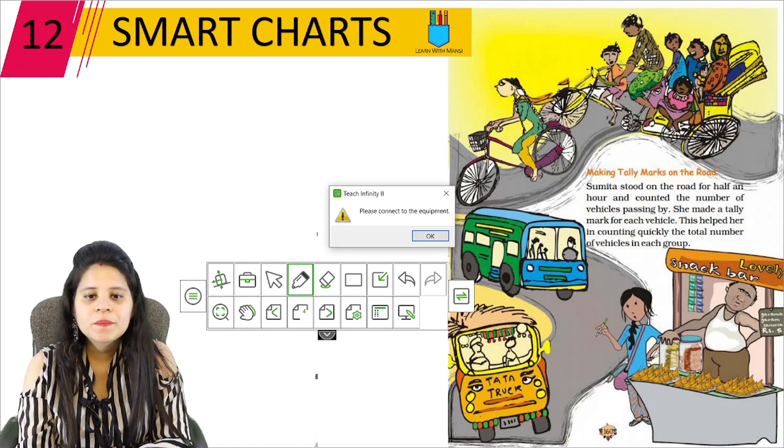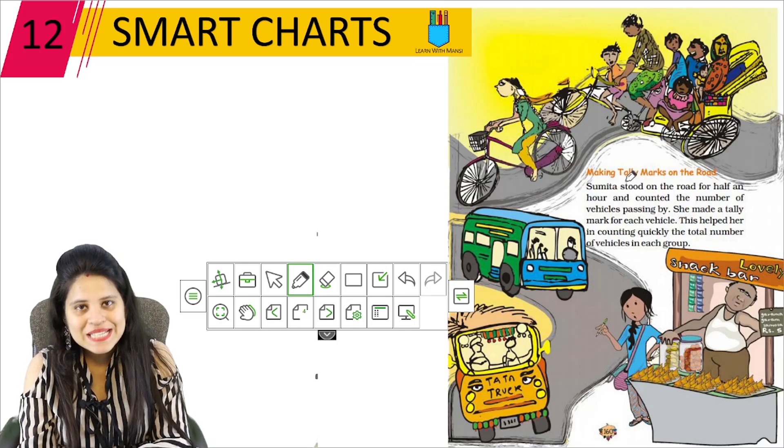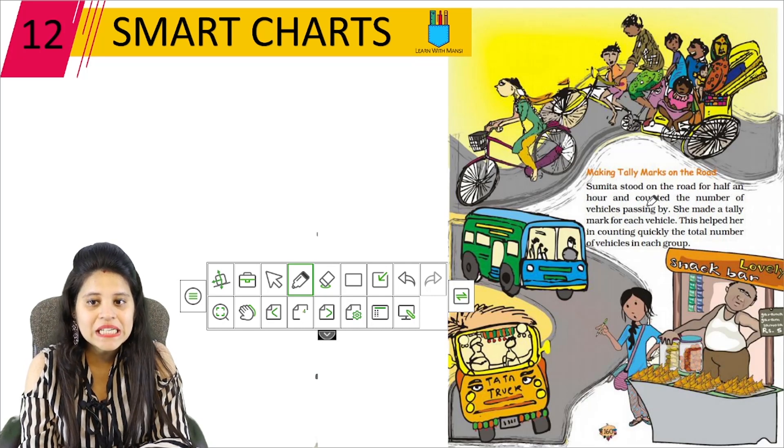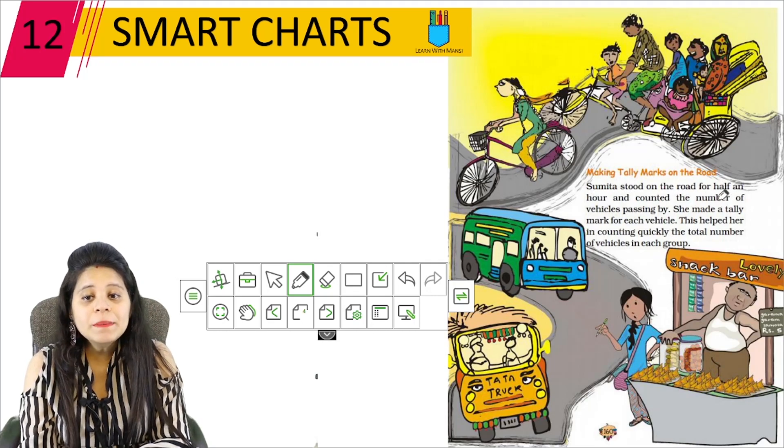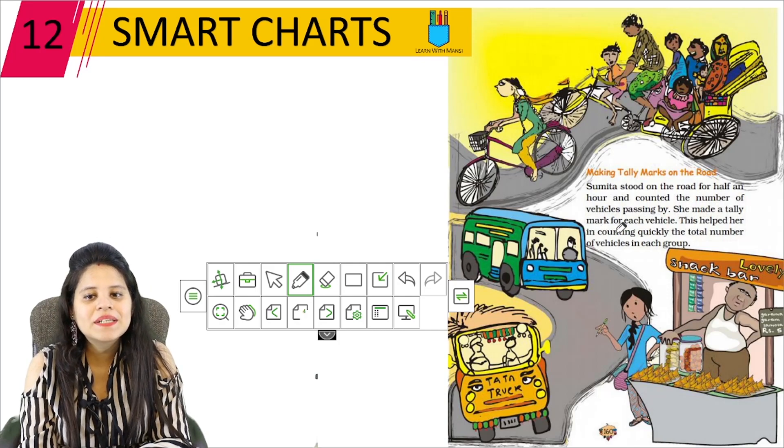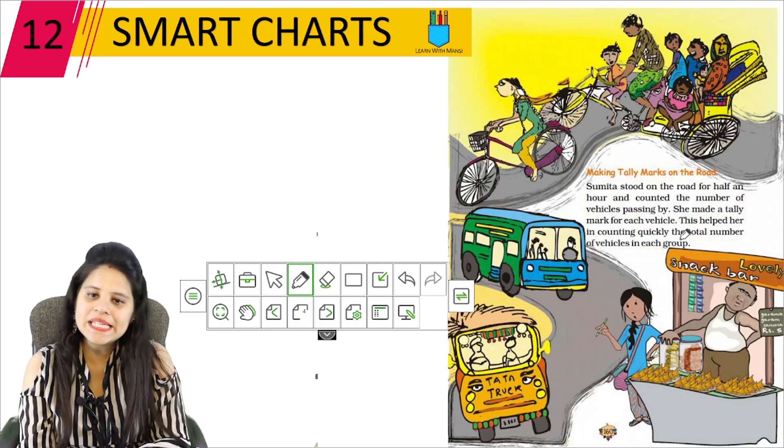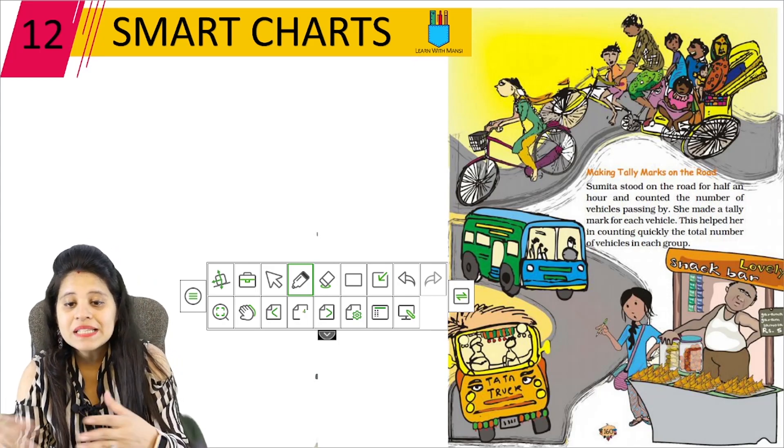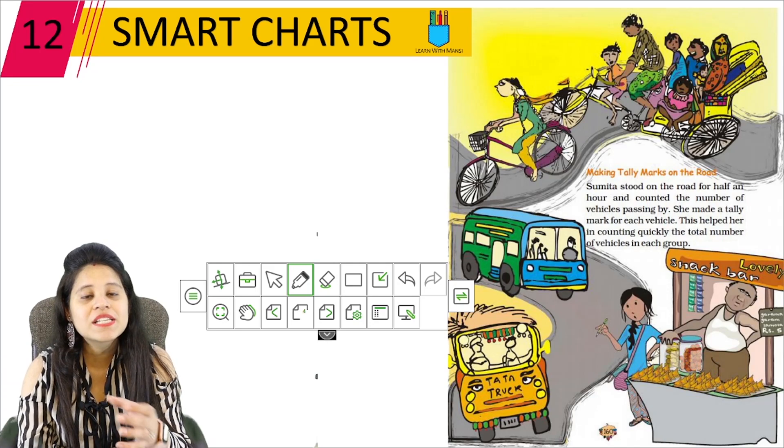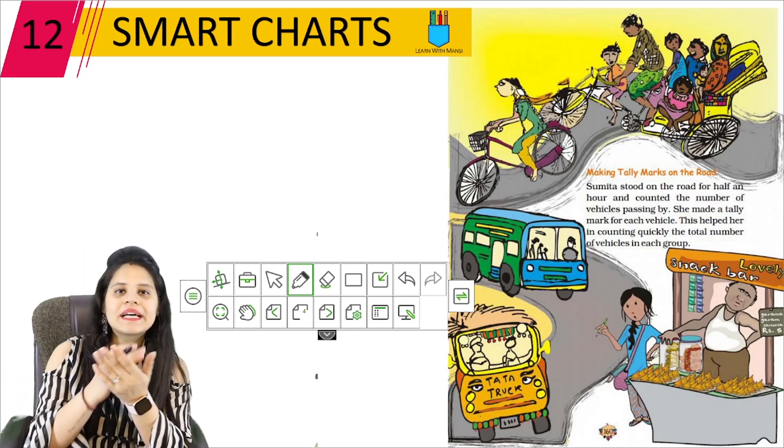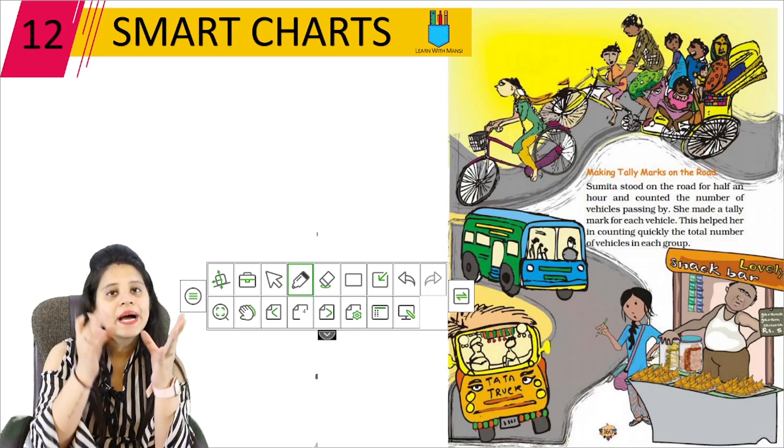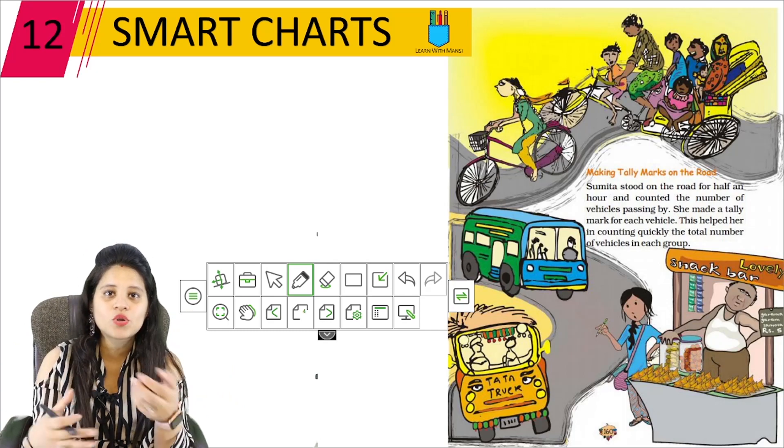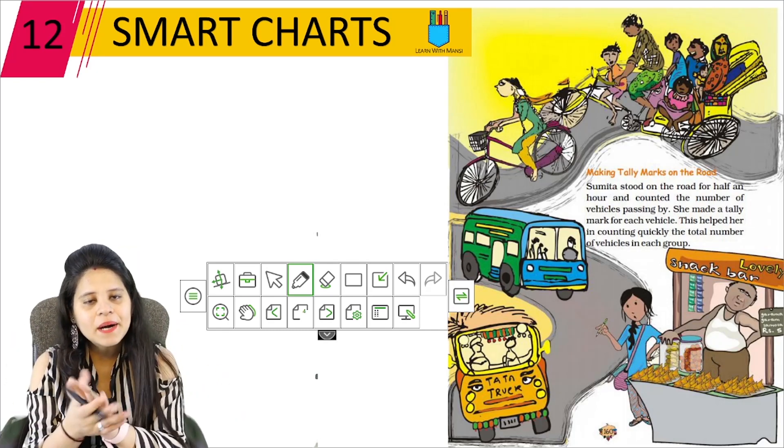Now let's read it. Sumita stood on the road for half an hour and counted the number of vehicles passing by. She made a tally mark for each vehicle. This helped her in counting quickly the number of vehicles in each group. Now what is she doing? Sumita stood on the road and counted the traffic on the road. So the number of vehicles are driving. The name of the vehicle. The truck, the rickshaw, the scooter. And then she made a tally mark. How many scooters passed on. How many buses passed on. This way. So we will do next page.